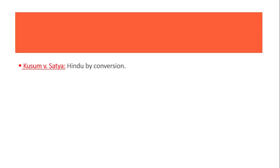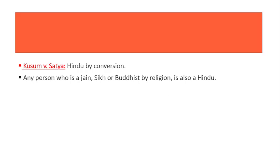Conversion ki through bhi Hindu dharm ko apnaya ja sakta hai. Conversion ka waise koi hard and fast rule nahi hai, but kuch Hindu sects mein shuddhi karan ka process hai. Agar koi bhi person Hindu god, Hindu idols ko maanne lagta hai, Gita, Upanishads ko follow karne lagta hai, toh woh Hindu kahlate hain. Hindu by conversion se related ek bohot important case law hai: Kusub versus Satya. Any person who is a Jain, Sikh, or Buddhist by religion is also a Hindu, aur unpar Hindu laws hi applicable hongi.